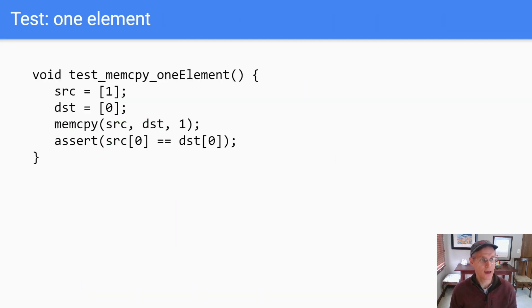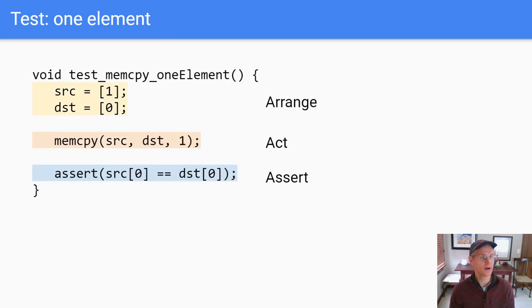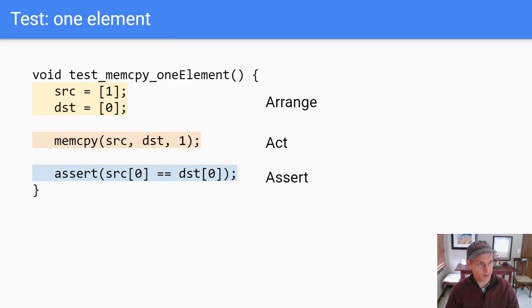Here's some pseudocode — it basically sets up two different arrays, the source and destination, then it calls mem copy and asserts that the data in the first one is equal to the data in the second one. That's a test for one element. While I'm here, I might as well do a drive-by advocacy: a test generally can be thought of as having three parts — arrange, act, and assert. Arranging sets up the conditions, act is calling the method being tested, and the assert is one or more assertions about what must be true when you're finished.